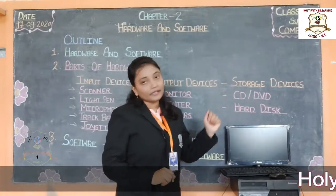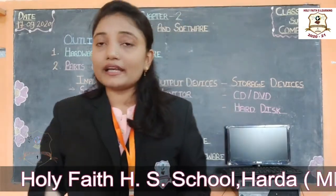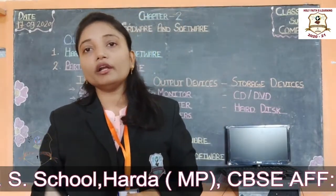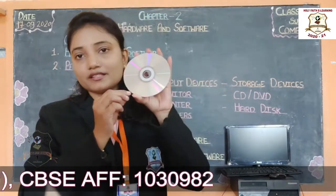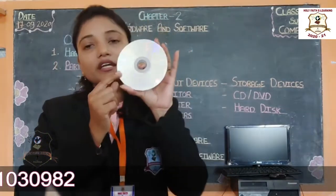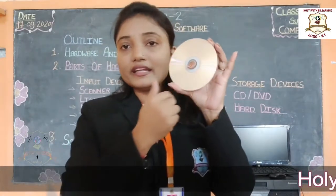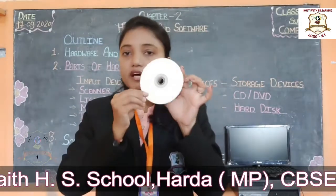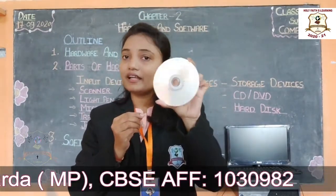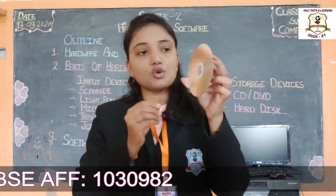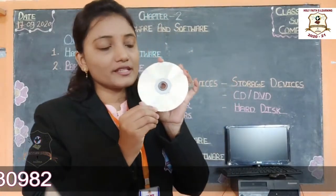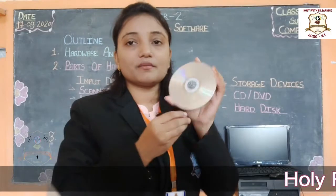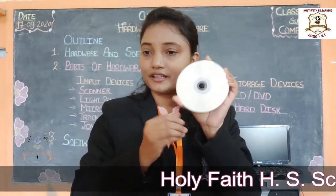First one is the CD and DVD. CD stands for compact disc and DVD stands for digital versatile disc. CD and DVD are round in shape and are used to store a lot of information, like music, songs, movies, and pictures.